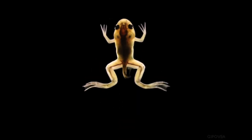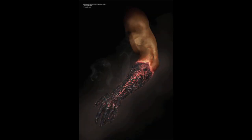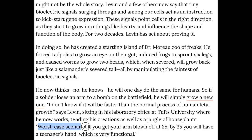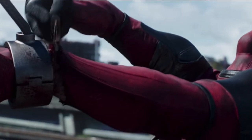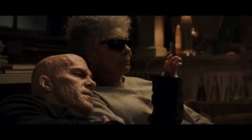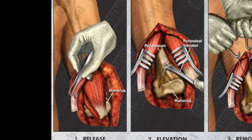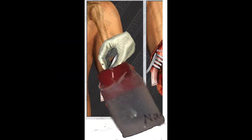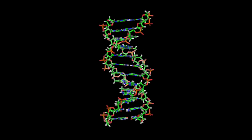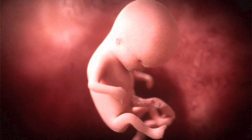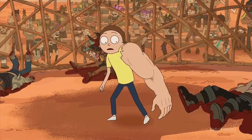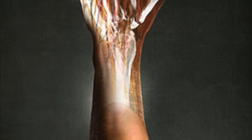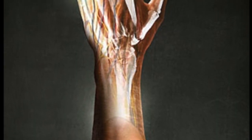So instead of going through the scarring process, it goes through the growth process. In fact, Michael Levin is so confident that he says the worst case scenario is that if you get your arm blown off at 25, by 35 you will have a teenager's hand. He's saying that Deadpool regeneration abilities are the future. All we would need to do is apply a biodome reactor immediately after amputation, at least initially. And because our bodies already know how to grow these limbs — we've done it before — it won't overgrow. And so this is the future of limb regeneration.